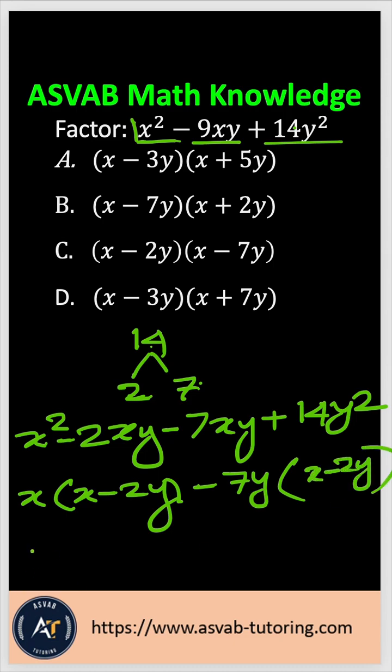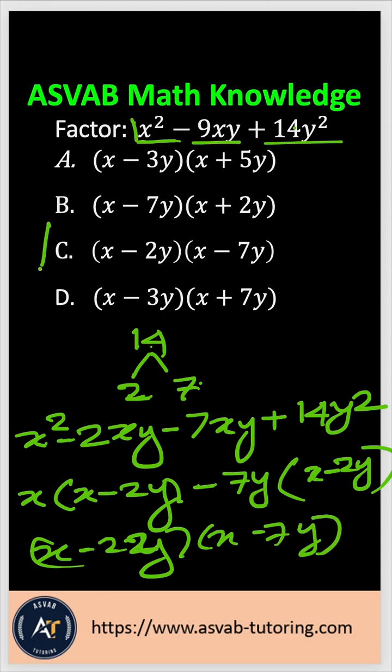So with that, that gives you x minus 2y times x minus 7y. So the correct answer is option C.